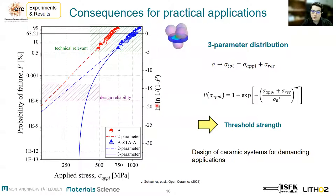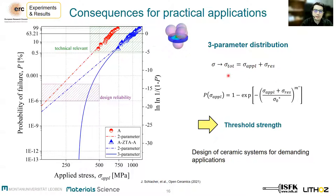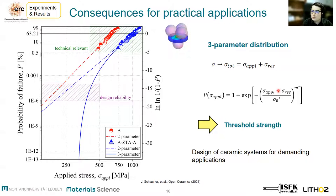But what are the consequences for practical applications? For demanding applications with high reliability where a low probability of failure is needed, it is recommended to use the three-parameter Weibull distribution instead of the two-parameter one. In the technically relevant range there is no difference between the two, but at low probability of failure, the three-parameter distribution tends asymptotically to a minimum strength — the so-called threshold strength — which is equal to the compressive residual stresses, the third parameter of the distribution. This threshold strength is defined as the strength below which no failure will occur.